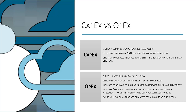The procurement costs for CAPEX items show up on an organization's balance sheet, and those costs are depreciated over several years, according to tax code.